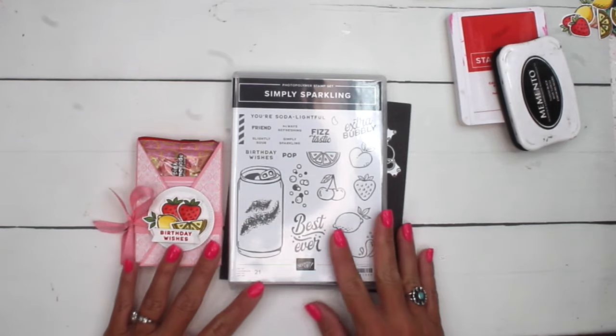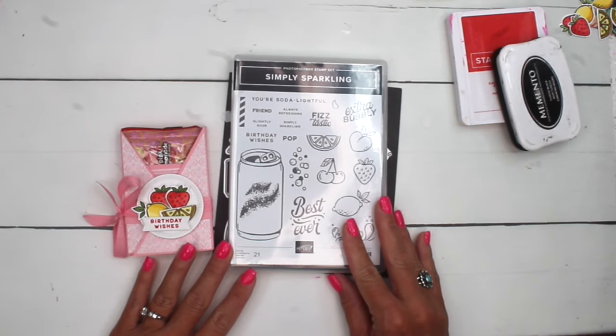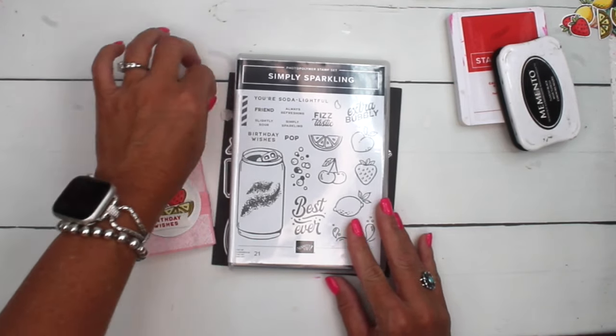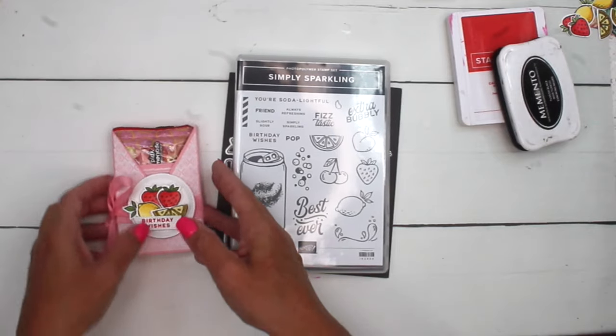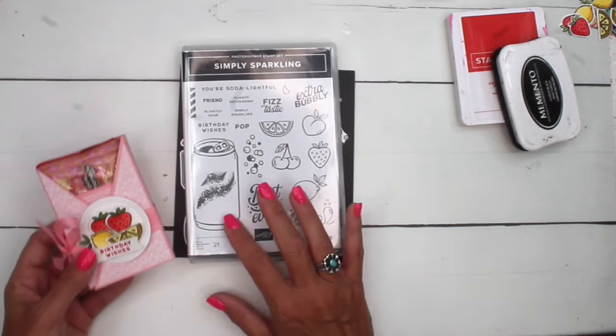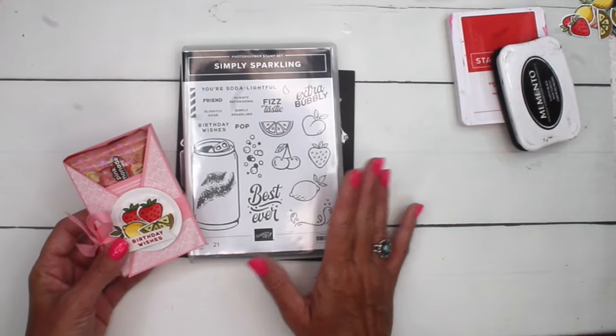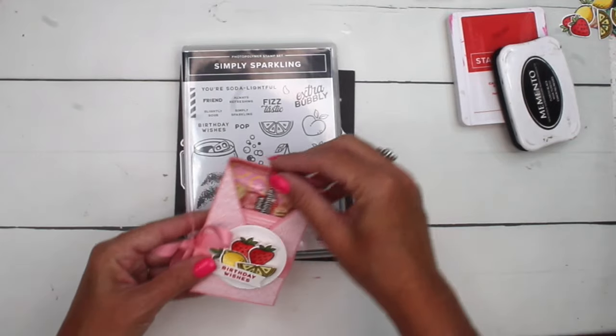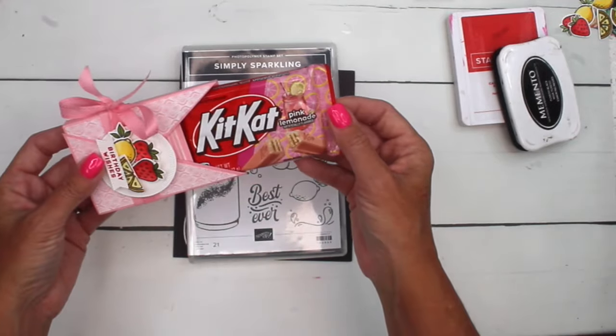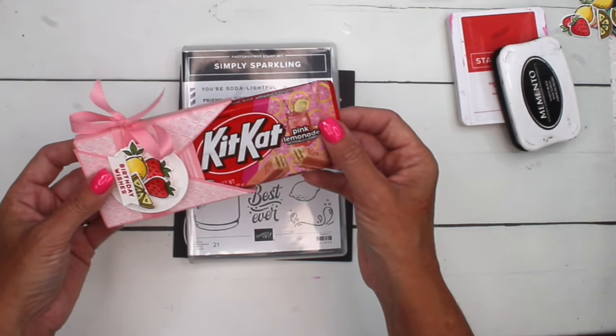Hey everybody, Erica Sirwin here from Pink Biker Who Designs. I've got one more Simply Sparkling project for you today. This time we're going to make a little treat holder. And I'm not using the can, I'm using the cute little fruit.